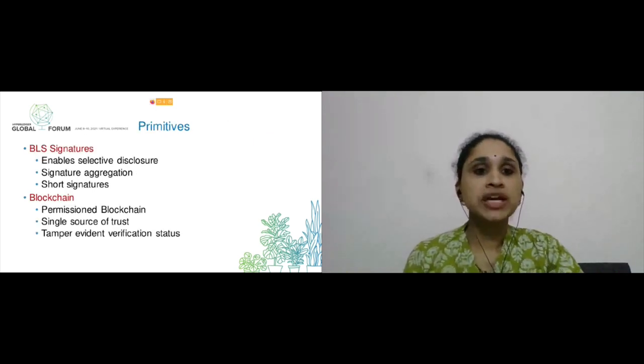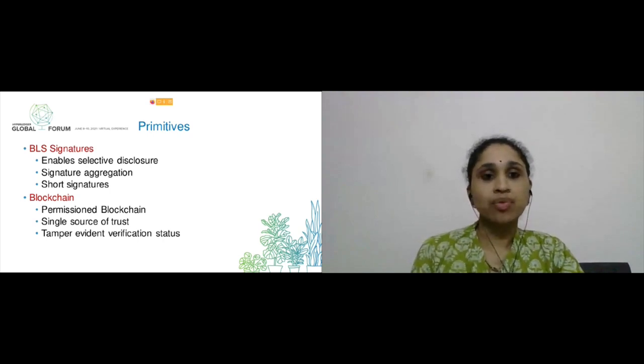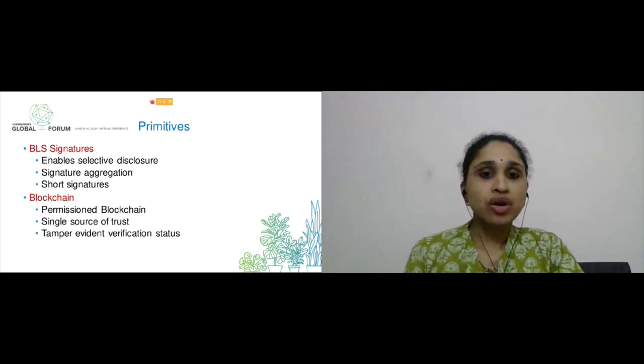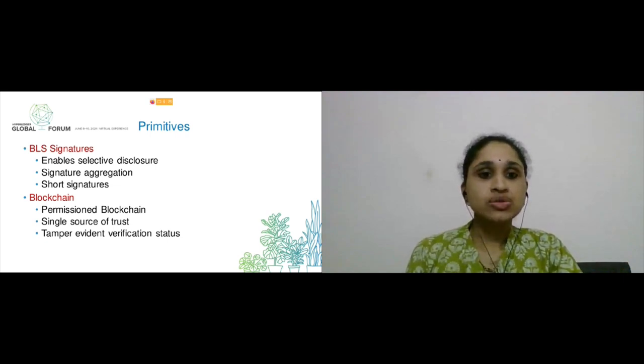Our system has two main primitives: one is BLS signature and the other one is blockchain. We chose BLS signature as it produces short signatures. It also facilitates selective disclosure and signature aggregation, which are important for our system. We use permissioned blockchain for our system. This enables us to have entities verified before onboarding them as peers. Blockchain acts as a single source of trust, and information stored on blockchain acts as immutable proof.